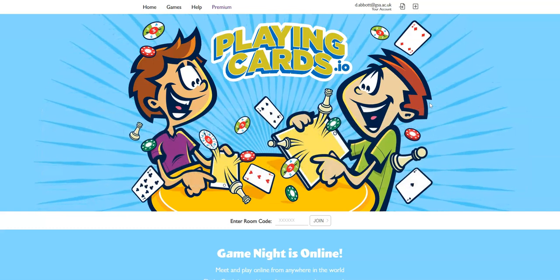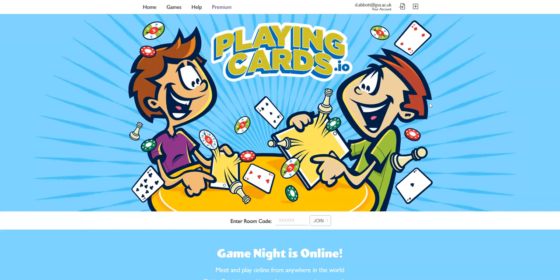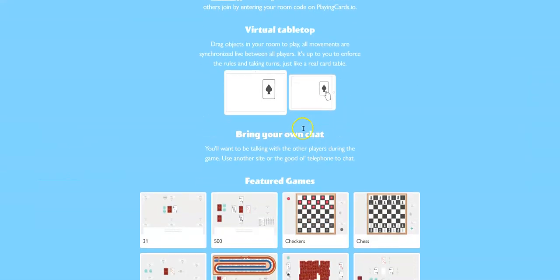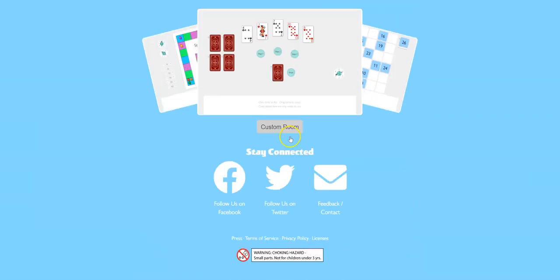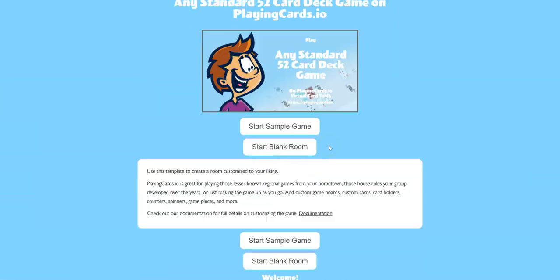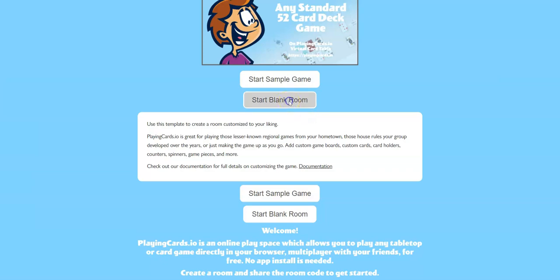Then you go to playingcards.io and you will scroll down until you find custom room. Click custom room and then click start blank room.